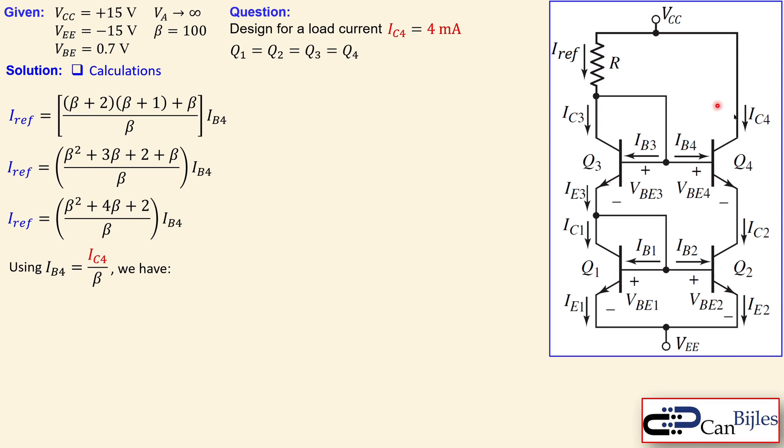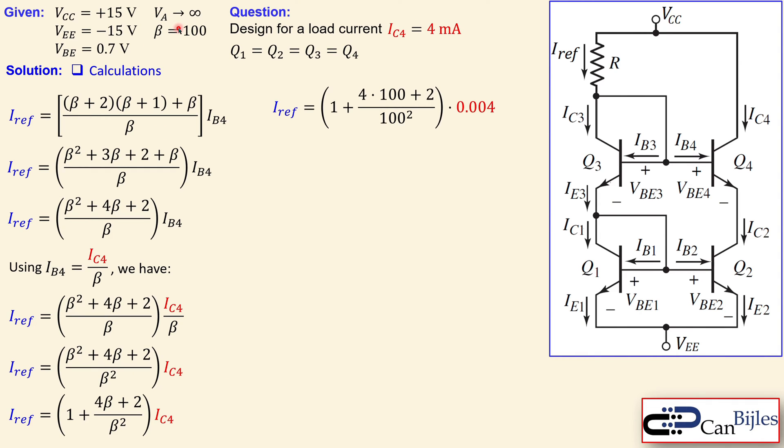We know that IB4 equals IC4 over β—the collector current is β times larger than the base current. Substituting this expression into Iref, and taking β in the denominator, you get β², and then you have IC4. You see now the relationship between the reference current and the load current. We can simplify by dividing each term by β², so you get 1 plus 4β/β² plus 2/β².